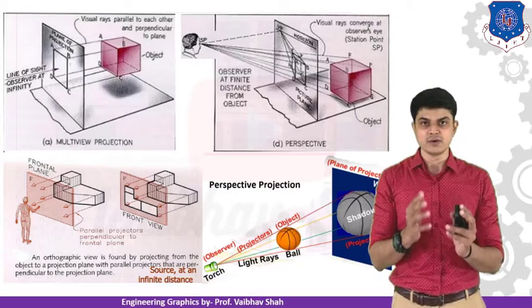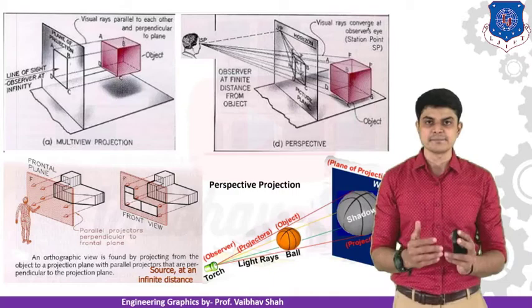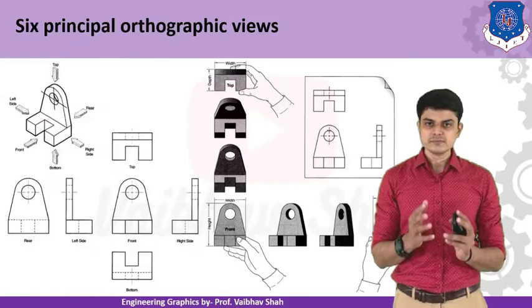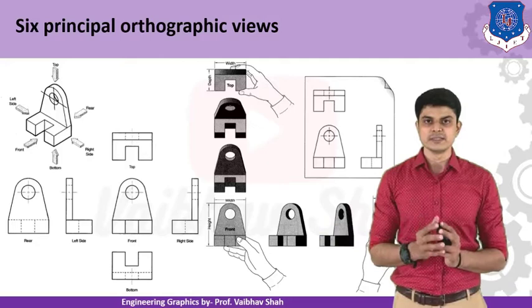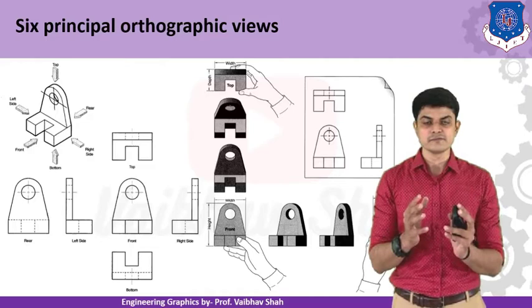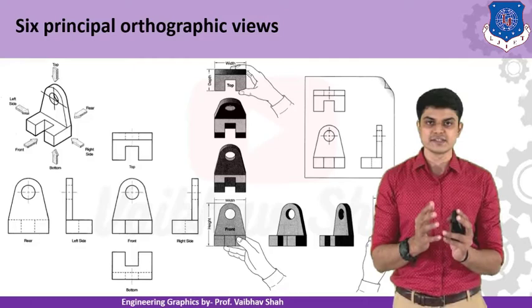That is why in engineering drawing, we only deal with orthographic projections. Let us understand this concept by a few examples. There are a total of six principal views possible for any object in the world. Let us understand which six views by observing the figure.